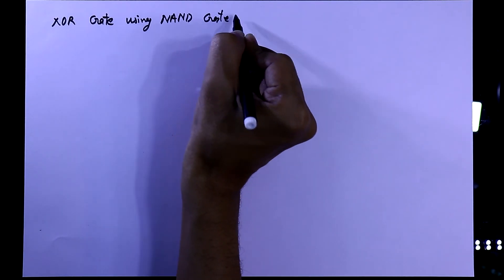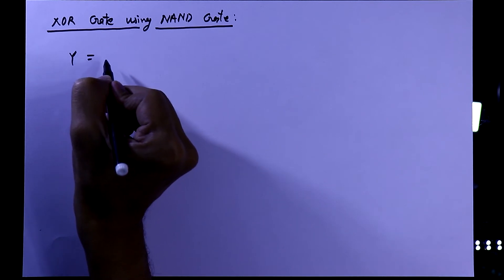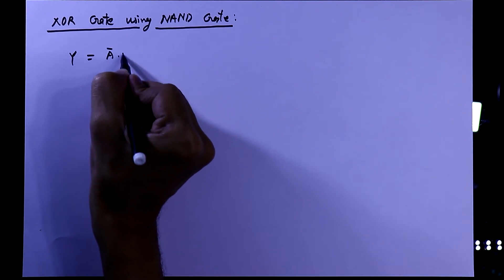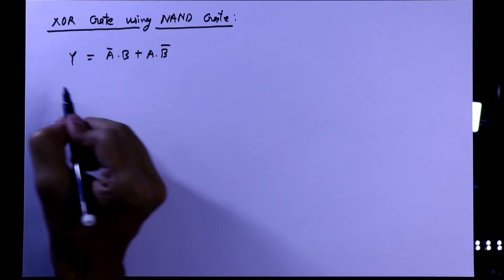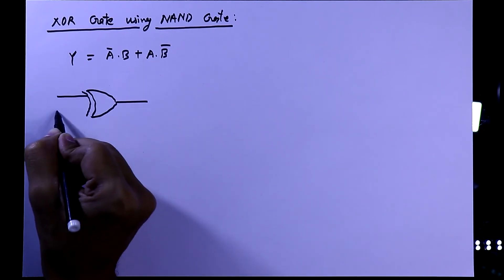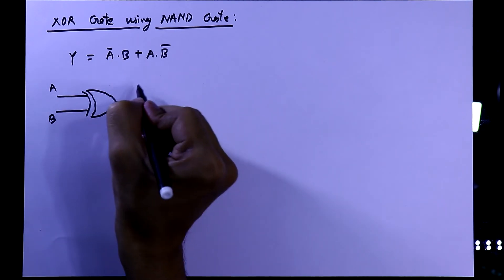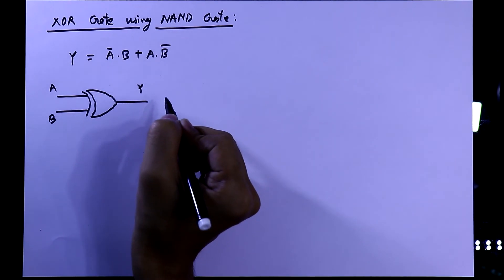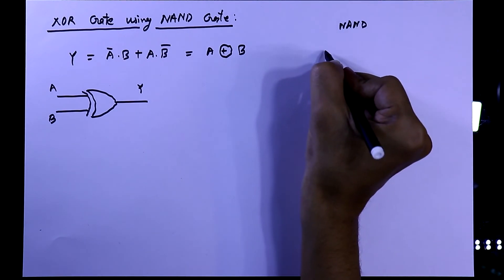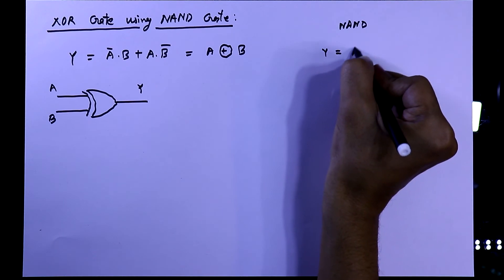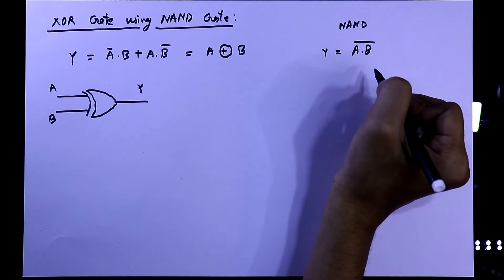XOR gate using NAND gate. The expression of XOR gate is Y equal to A-bar dot B plus A dot B-bar. Its symbol has input A and input B and Y as the output. The mathematical expression of NAND gate is Y equal to A dot B whole bar.